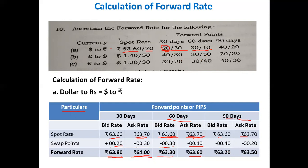For the 90-day forward rate, the spot rate is the same: 63.60 bar 63.70. The 90-day forward points are 40 bar 20, which is a decreasing trend, so we deduct. 63.60 minus 0.40 equals 63.20. 63.70 minus 0.20 equals 63.50. The 90-day forward rates are 63.20 bar 63.50.